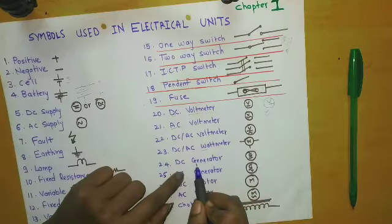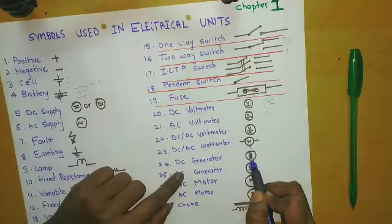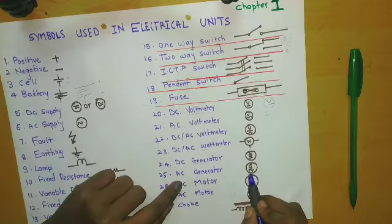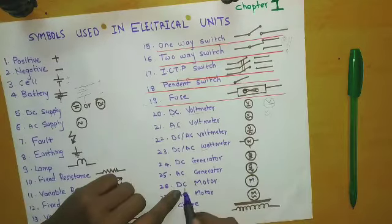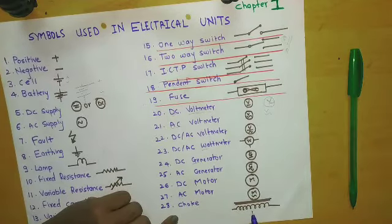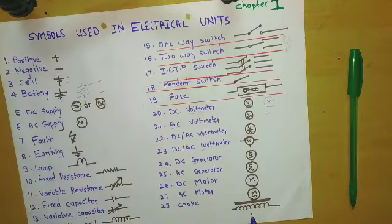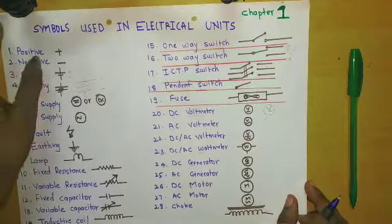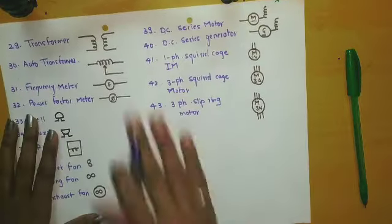DC generator — when the term generator comes we write G, and DC is indicated accordingly. AC generator — the sine wave indicates AC and G indicates generator. DC motor, AC motor, and choke — this is the symbol of a choke. Choke is used to block high frequencies passing through the DC and low frequencies through the AC.